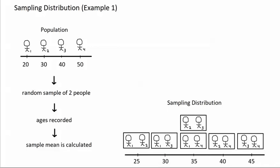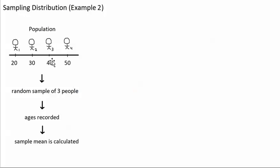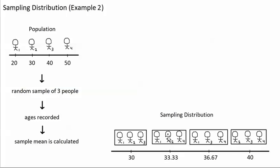Let's look at another example of a sampling distribution. In this situation, the person is taking a random sample of 3 people from this population, recording their 3 ages, and calculating the mean age of the 3 people to estimate the mean age of the population. This is the sampling distribution. There are 4 possible samples that might be selected, and each possible sample has its own sample mean. If the person gets persons 1, 2, and 3, the sample mean will be 30. If the person gets persons 2, 3, and 4, the sample mean will be 40. If the person gets persons 1, 2, and 4, the sample mean will be 33.33. So the number that the sample mean comes out to depends on which sample is selected.